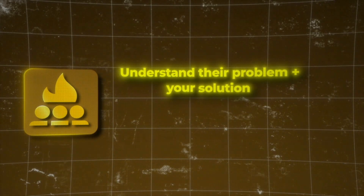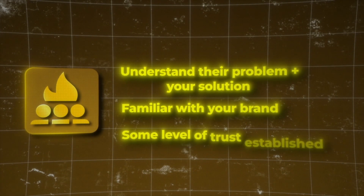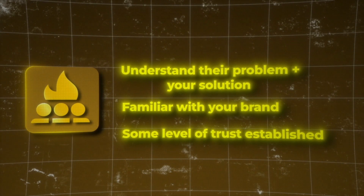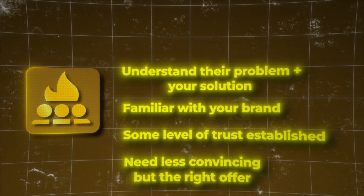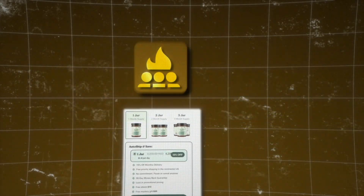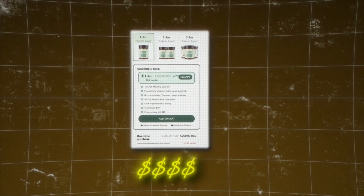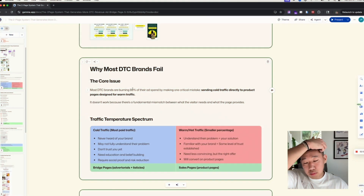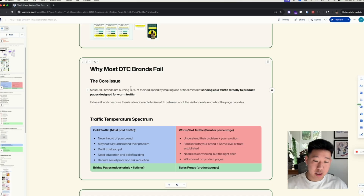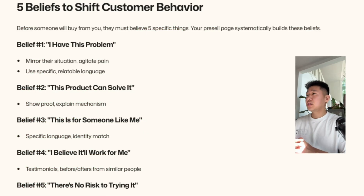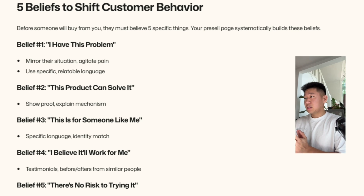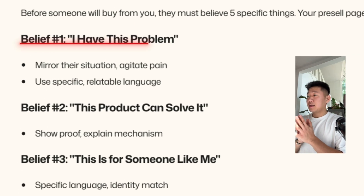Warmer traffic, which is a much smaller percentage of your overall traffic, already understands the problem and your solution, knows your brand, and has some level of trust. They need less convincing to convert, which is why product pages are better for that — because product pages are focused on conversion, while bridge pages are focused on educating and building trust.